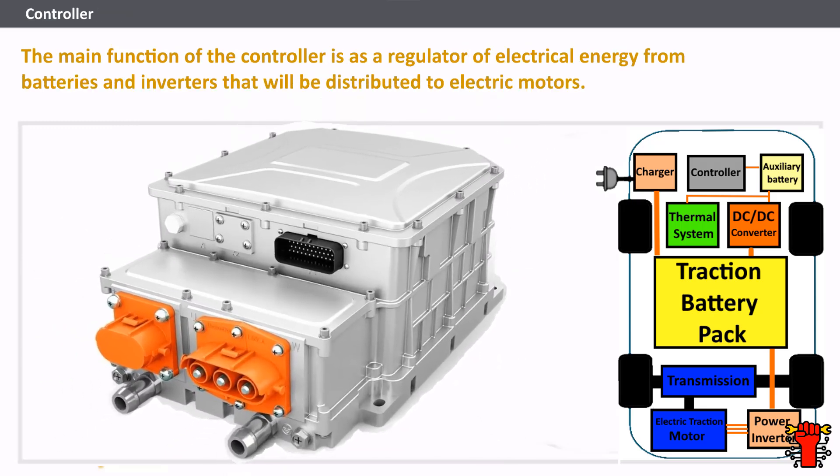The controller's main function is to regulate electrical energy from batteries and inverters that will be distributed to electric motors. The controller receives its main input from the car pedal set by the driver. This pedal setting determines the frequency or voltage variation that enters the motor and determines the car's speed. In brief, this unit manages the flow of electrical energy from the traction battery, controlling the speed of the electric traction motor and the torque it produces.